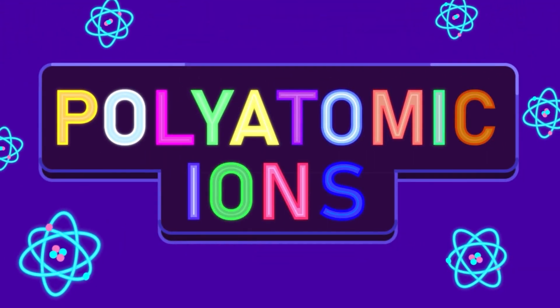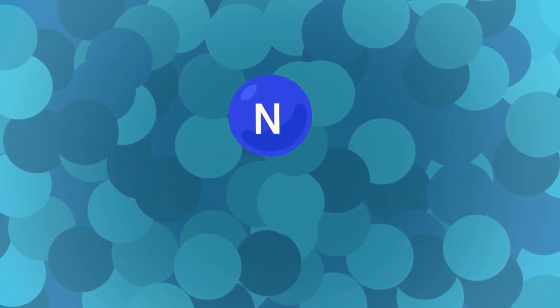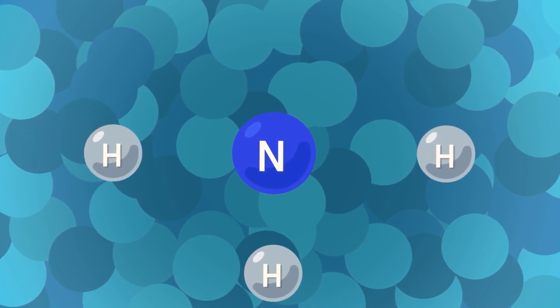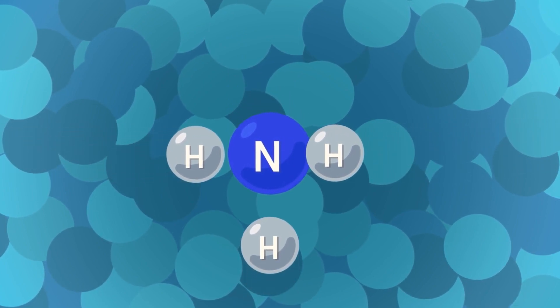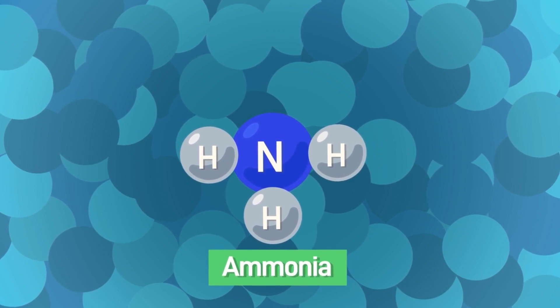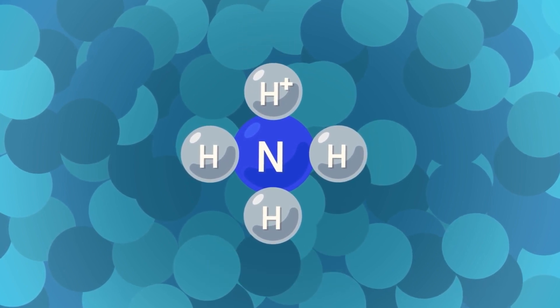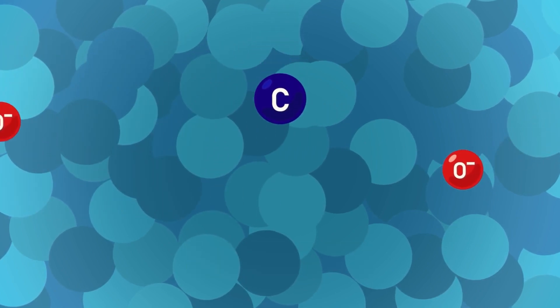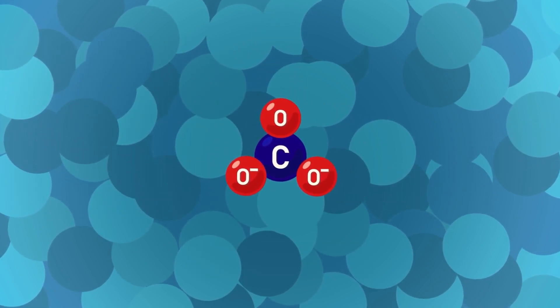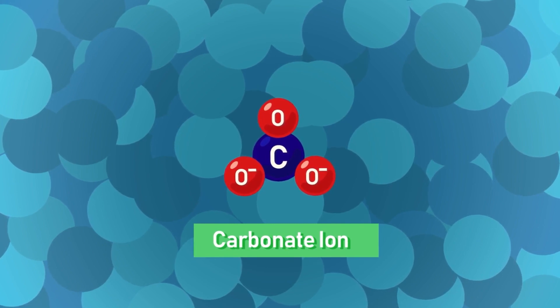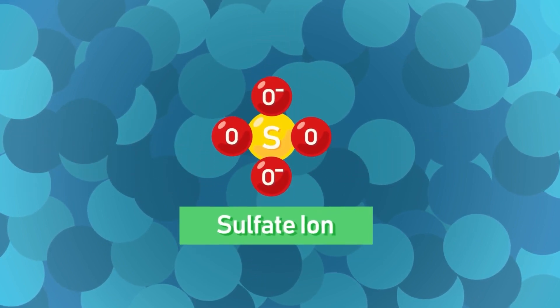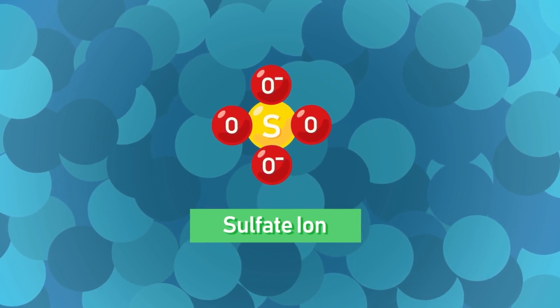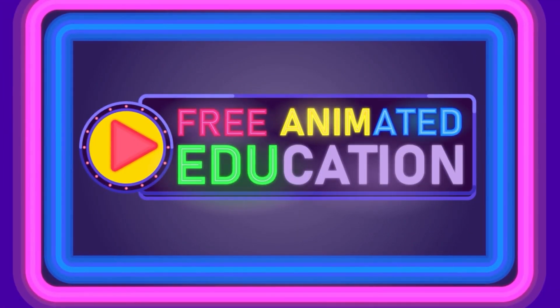Polyatomic ions are ions that consist of two or more atoms. Examples of these are ammonium ion, a combination of an ammonia molecule with a hydrogen ion (NH4+), carbonate ion, a combination of carbon and oxygen bonded together (CO3 2-), and sulfate ion, a combination of sulfur and oxygen.